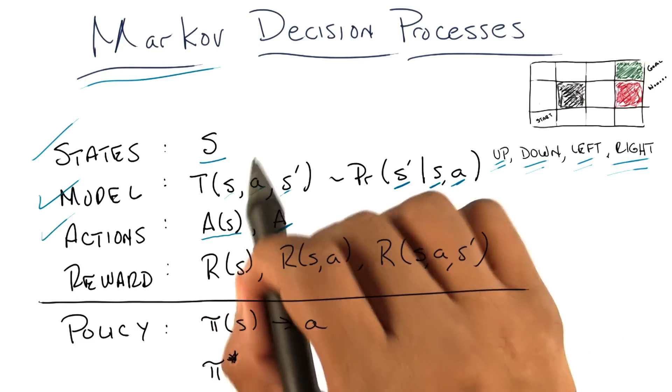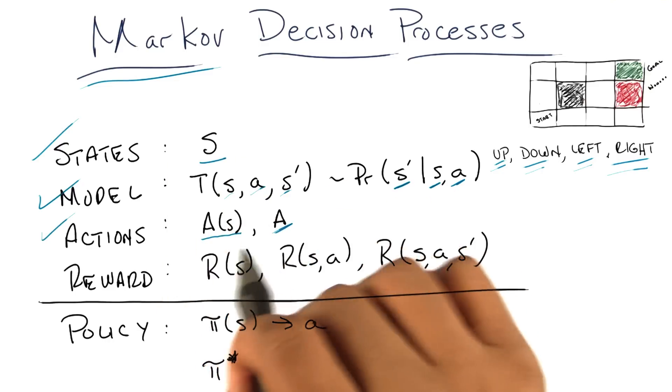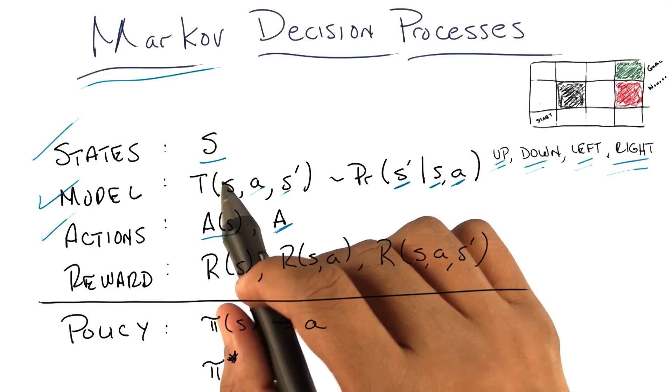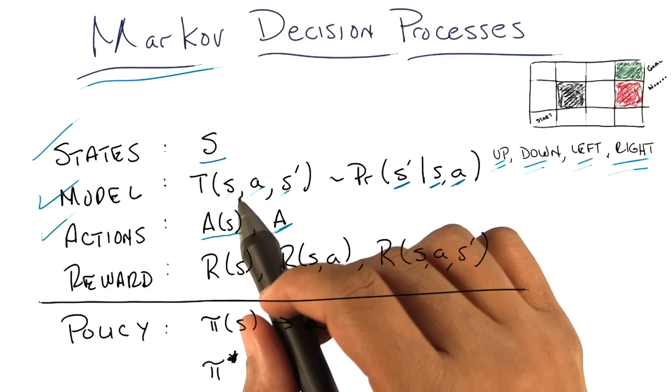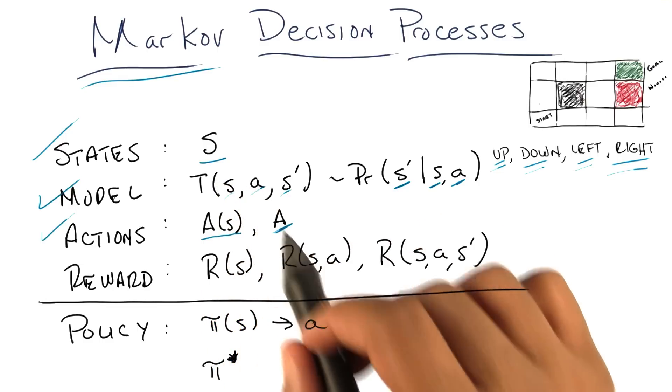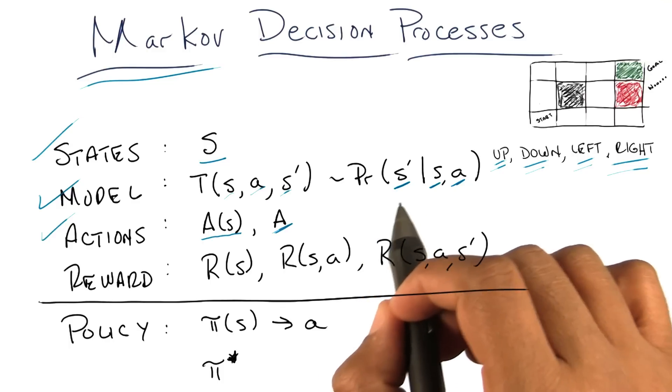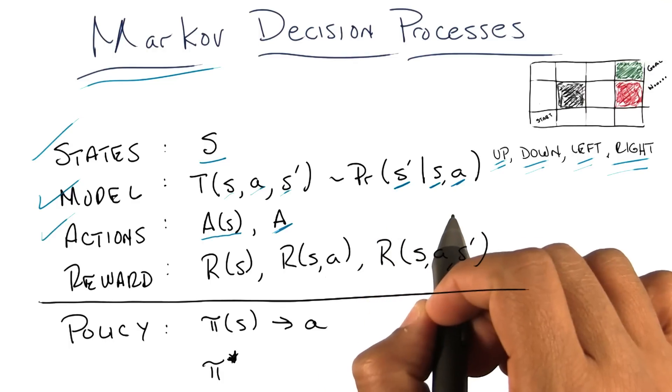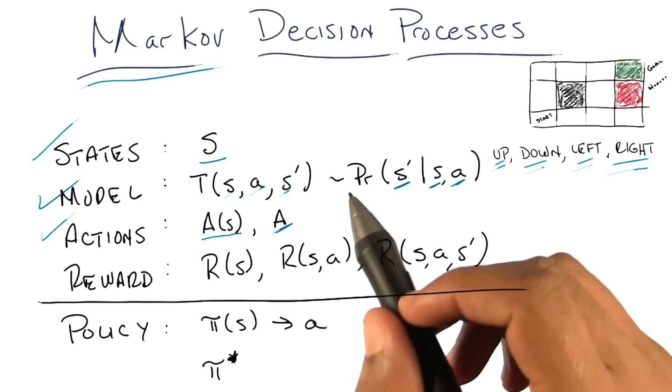I mean in some sense you could argue that a Markov decision process, what we've described so far, these three things, in fact do describe the universe. The states are, you know, the positions of all the atoms. The positions and velocities of all the atoms in the universe. The transition models, as you take certain actions in the world, whatever they are, how the state of the universe changes in response to that. And the actions are whatever those set of actions can be.